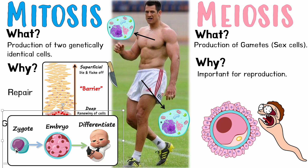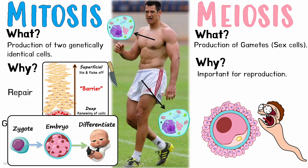For growth: your sperm cell and egg cell fuse to make a zygote, and this stem cell divides by mitosis over and over again to form an embryo. Those cells keep dividing, forming a bigger and bigger structure, eventually resulting in a baby. All those cells differentiate to become brain cells, skin cells, liver cells, and so on. That's the role of mitosis in growth and repair.